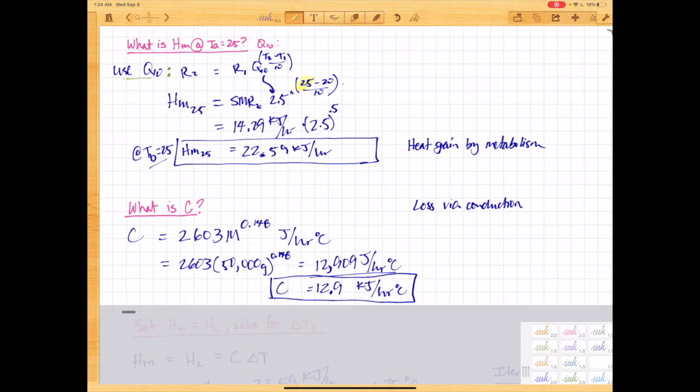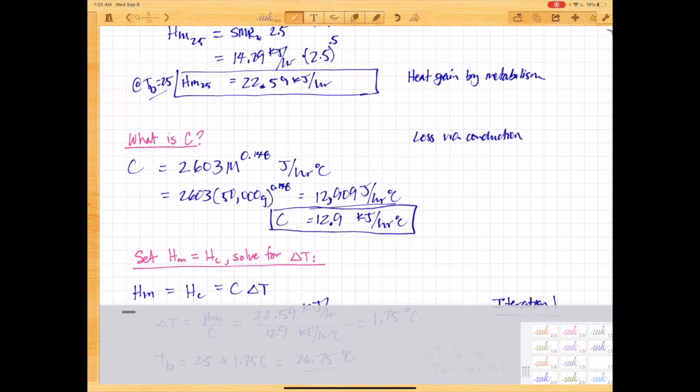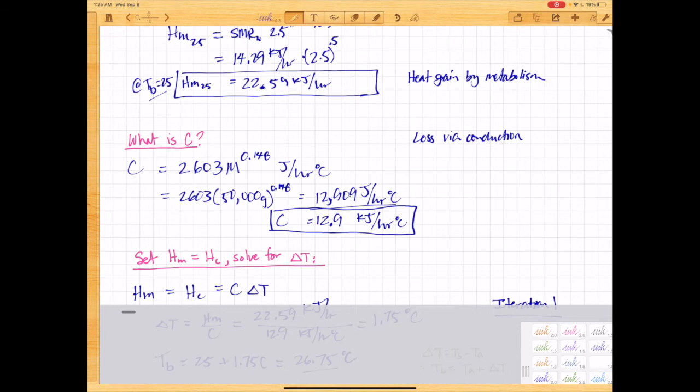So now we just have to set HM, the heat of metabolism, equal to the heat of conduction and solve for delta T. So recall that HC can be expressed as C delta T. So if we set HM and HC equal, then we can solve for the delta T here.